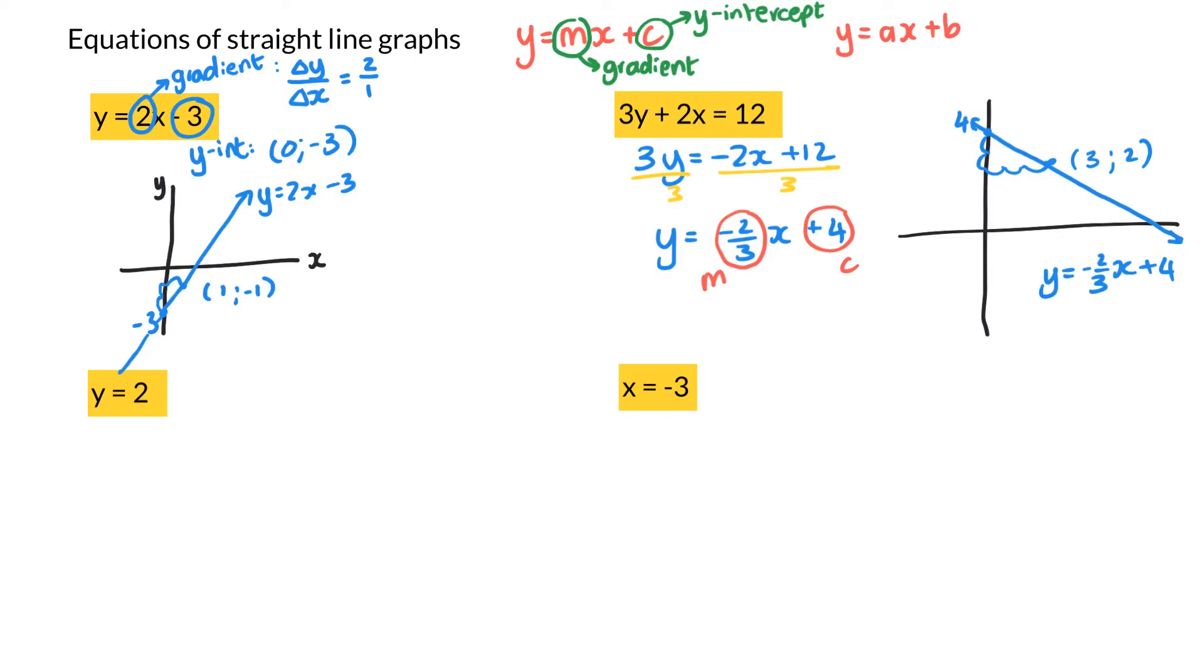Now the next graph, I have y equals 2. So if you think about the standard form y equals mx plus c, surely the gradient will be 0, which means that I'm going to have no rise over my run. So surely my graph is going to have to be horizontal. But where does it cut the y-axis? Surely it has to cut the y-axis at 2.